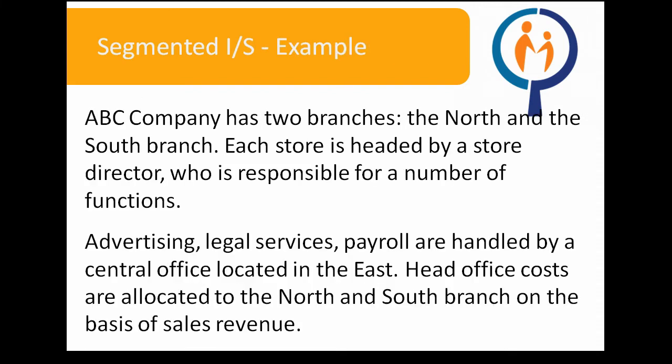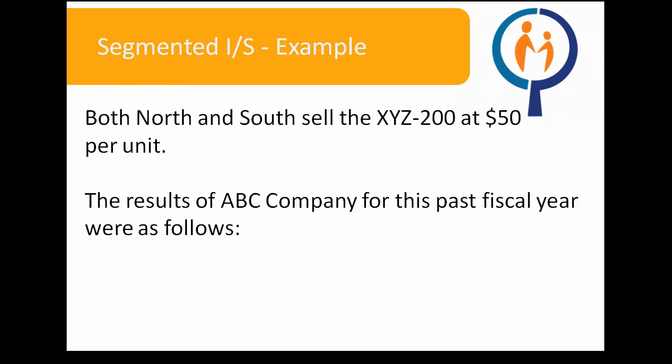Let's work on an example. ABC Company has two branches, the North and the South branch. Each store is headed by a store director who is responsible for a number of functions. Advertising, legal services, and payroll are all handled by a central office located in the East. Head office costs are allocated to the North and South branch on the basis of sales revenue. Both North and South sell the XYZ 200 at $50 per unit. The results of ABC Company for the past fiscal year were as follows.